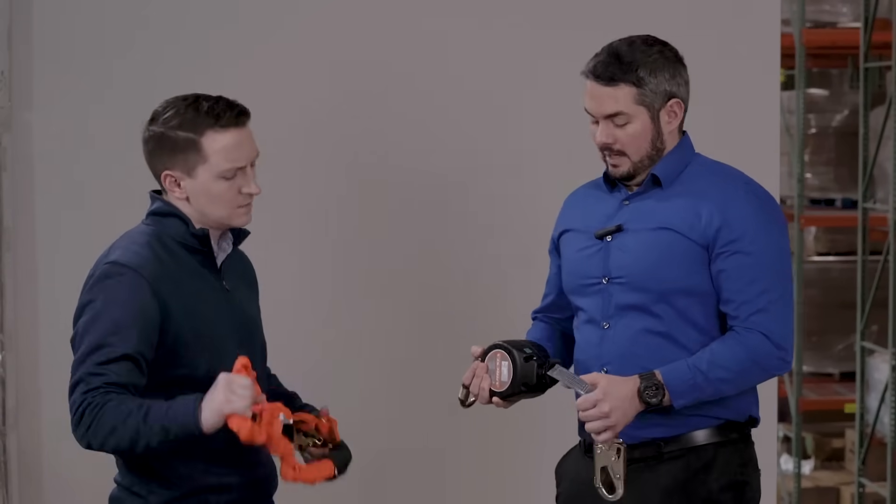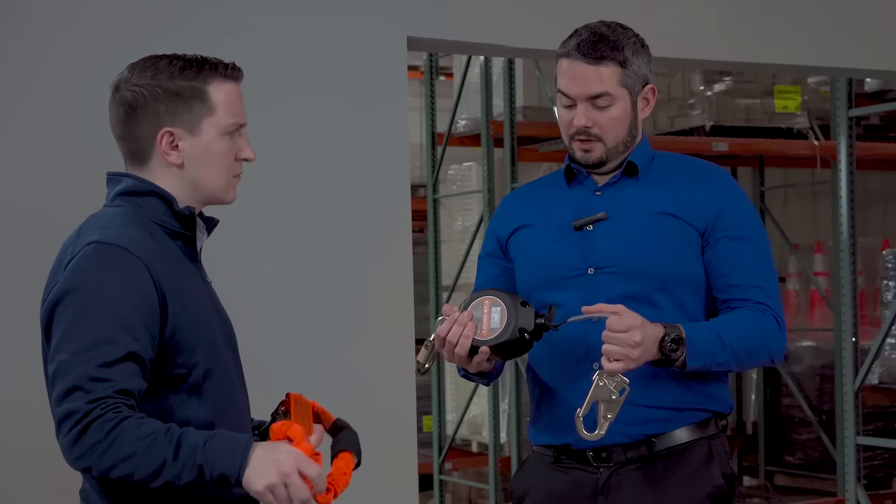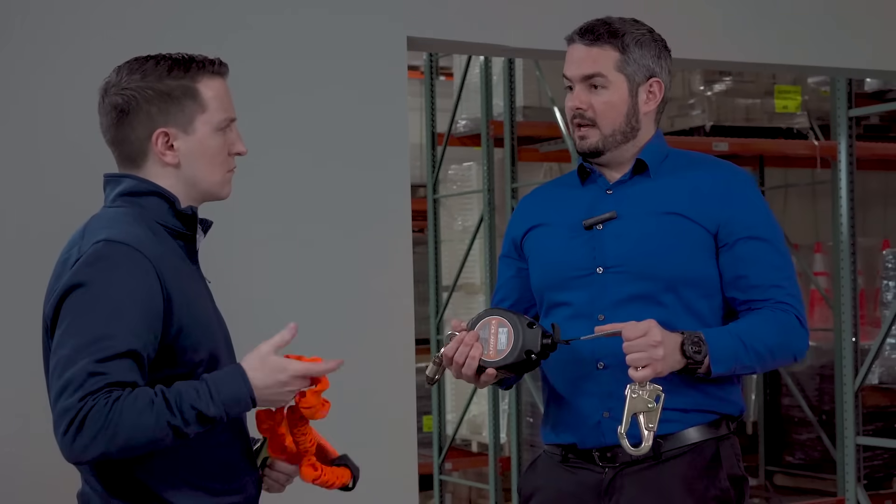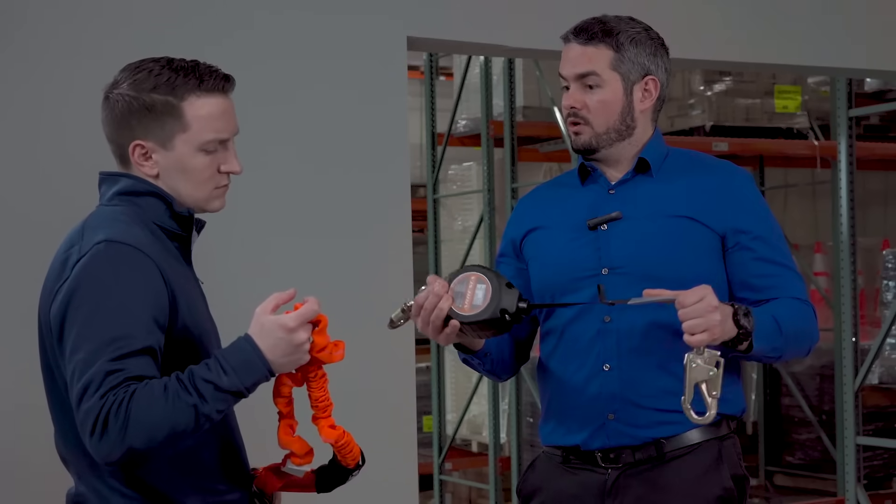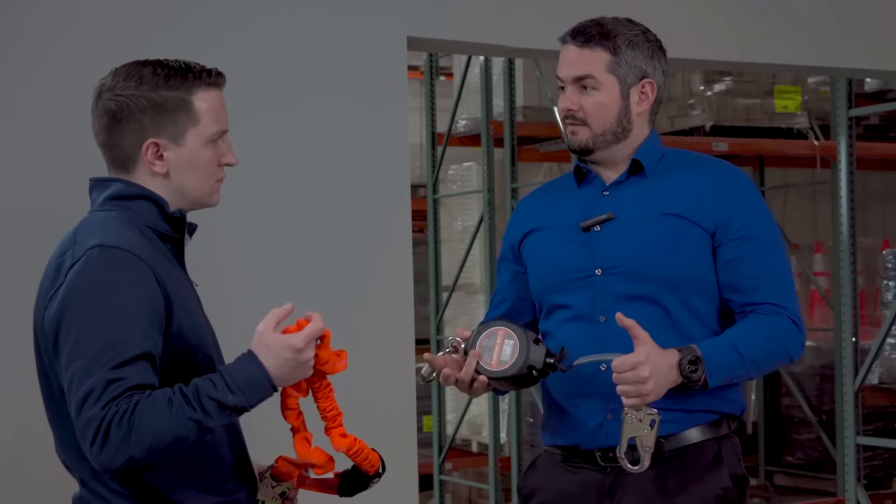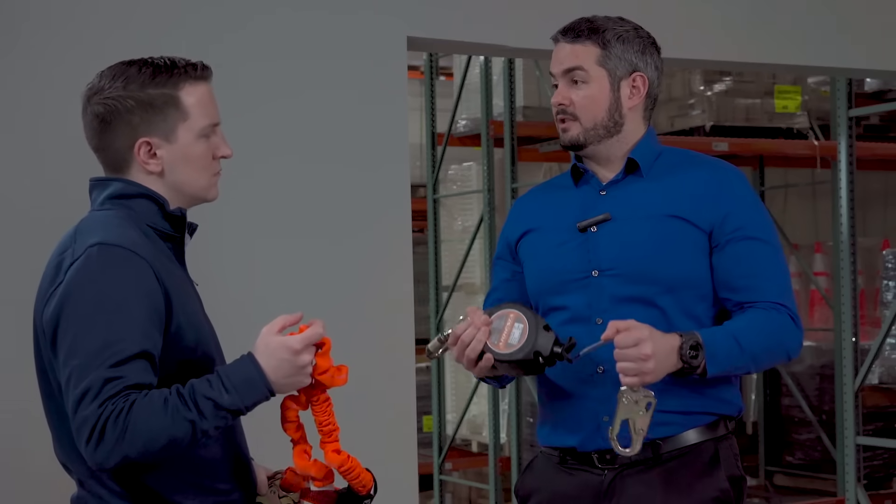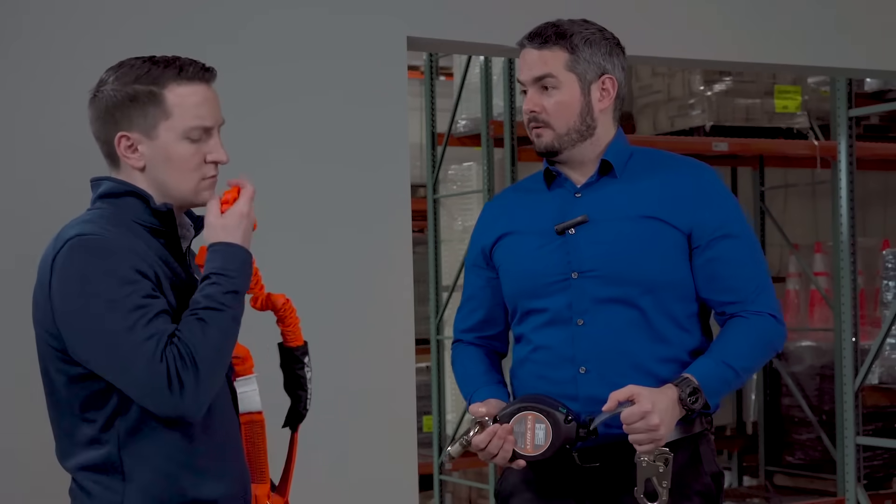Okay, so you mentioned they're a little safer. How so? The main difference there as far as safety goes is that the SRD is going to have a much shorter fall distance for your workers. Meanwhile the lanyard there, 6 feet, it's going to have a greater amount of clearance that's necessary before it's going to stop your worker from falling.